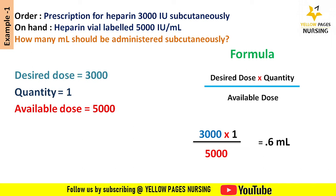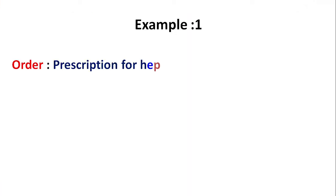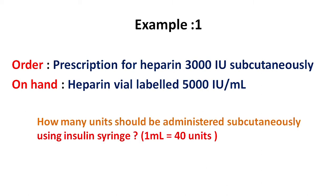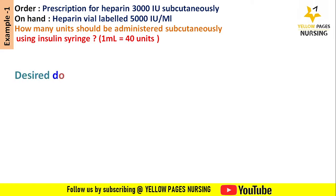Now let's look at the same example, but here we are going to calculate how many units should be administered subcutaneously using an insulin syringe containing 1 ml equals 40 units. In the previous example we calculated how many ml was needed; in this example we will calculate how many units are needed.